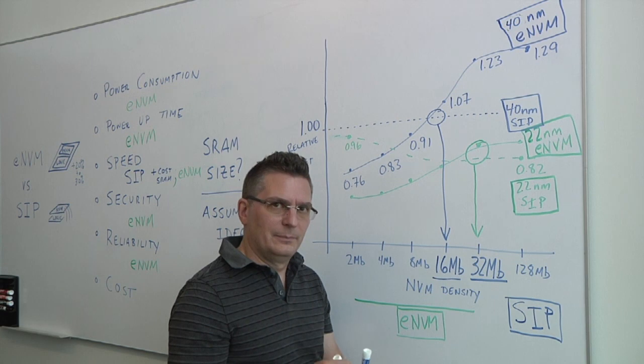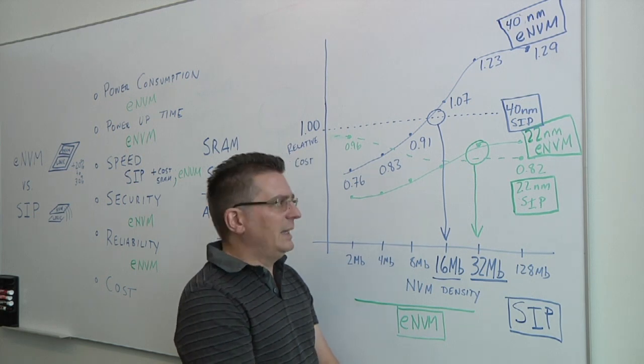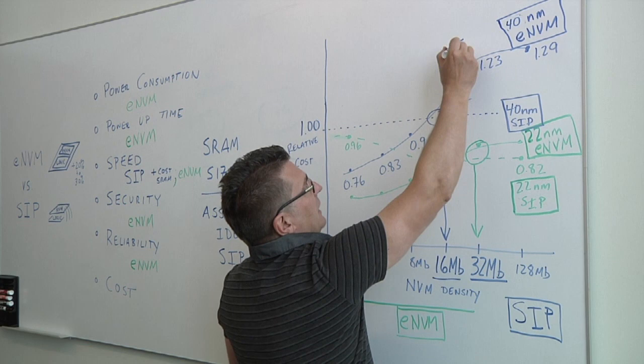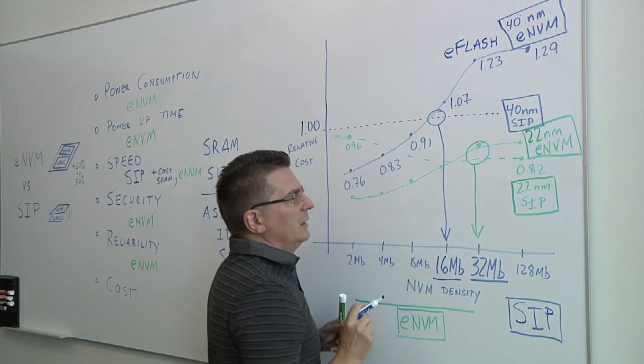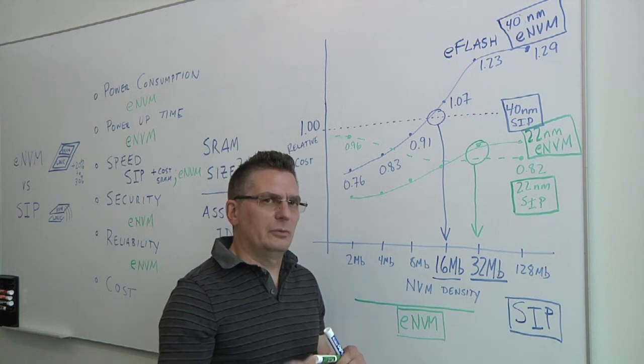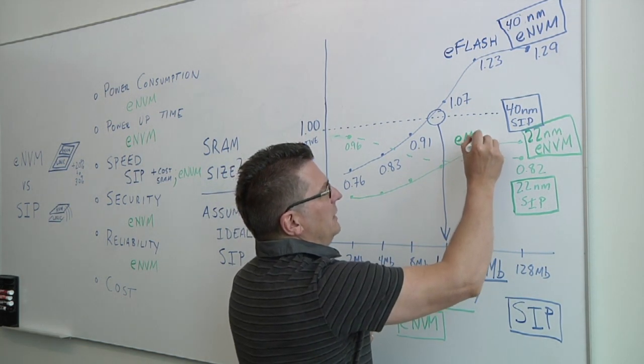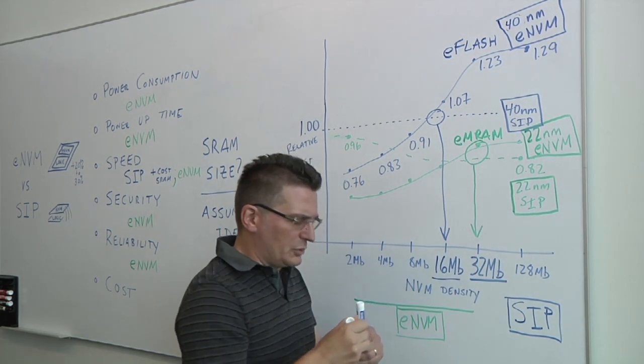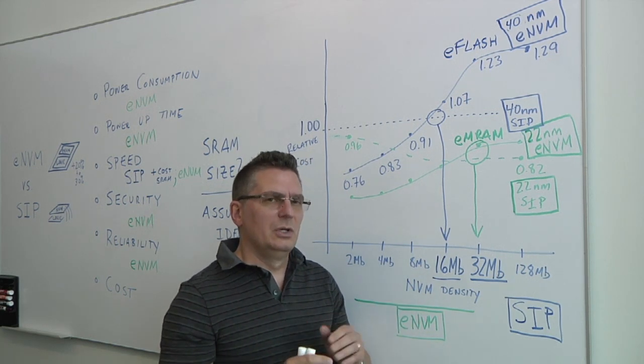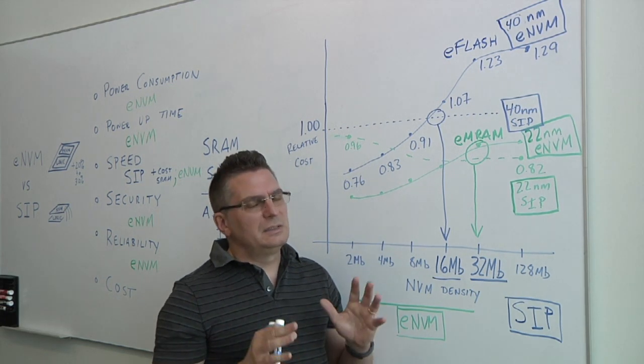Do these trend lines change at all as we move forward, as we start getting more sophisticated devices, potentially new materials? Yeah, that could be the case. And in this case, we're talking about 40 nanometer. And in our case, the embedded NVM here is eFlash. And eFlash at the more advanced nodes is getting difficult to scale, difficult to bring the cost down. As we look ahead to 22 nanometers, the GlobalFoundries offering, plus offerings from our foundry competitors, are moving to an embedded NVM technology, which is based on magnetics, which is eMRAM. Now that's being pursued by ourselves and two different foundry competitors in the 2x nanometer range, being 28 or 22. So the embedded NVM technology is changing, but the fundamentals of how it compares versus a SIP approach is not changing.